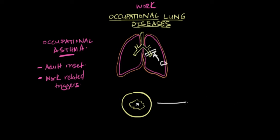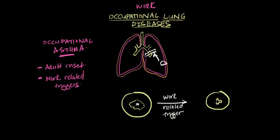What happens in occupational asthma is that in response to some work-related trigger, a couple of changes occur to this airway. Firstly, the airway itself becomes smaller, and secondly, the lumen of the airway becomes smaller as well. Just looking at this simple diagram, you can see that trying to breathe through this airway is much more difficult than through a normal airway, and this is what accounts for the symptoms of asthma.